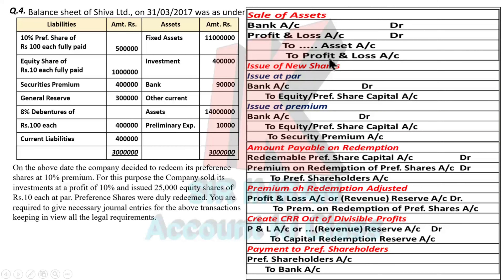When investment is sold at profit, credit P&L account. I showed both options — profit and loss — in the performa. Since it is a profit, credit P&L. Entry: Bank Account Dr. To Investment, To P&L. After selling the asset, check whether new shares are being issued. Here equity shares are issued at par, so entry is: Bank Dr. To Equity Share Capital. If it were at premium, it would be: Bank Dr. To Equity To Security Premium.